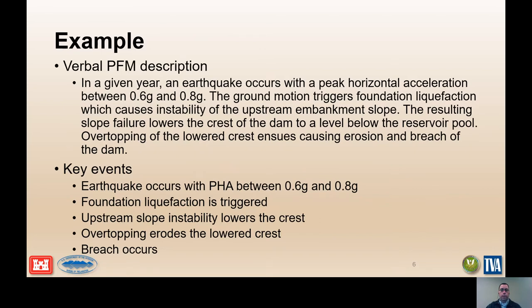The potential failure mode can be decomposed into an event tree by extracting the key events from the description. In this example, the key events for overtopping due to seismic crest deformation are shown. The initiator is an earthquake with a peak horizontal acceleration between 0.6 G and 0.8 G. The failure mechanism involves foundation liquefaction, slope instability that lowers the embankment crest, and overtopping with breach.